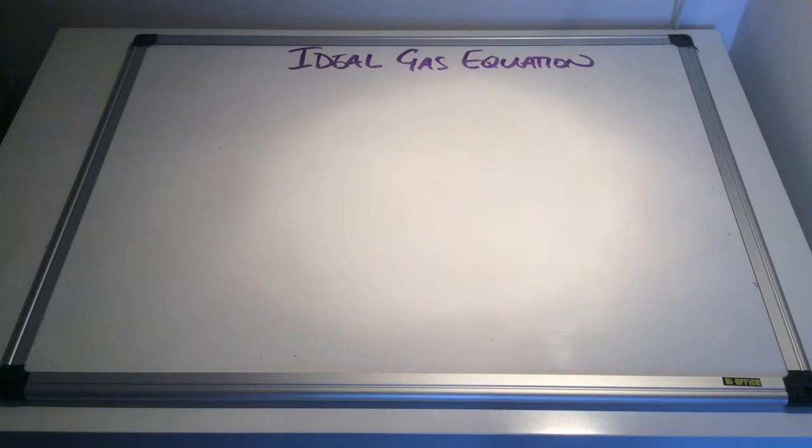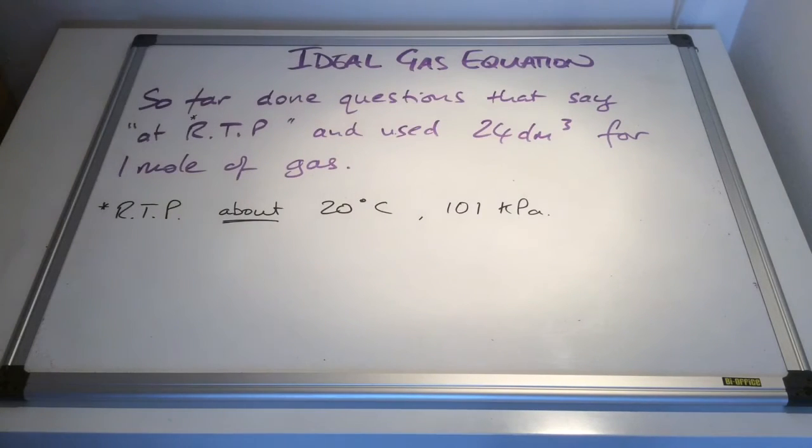In this video I'm going to look at the ideal gas equation. Before I look at the ideal gas equation, I just want to explain why we use it and how it's different to the questions that we've done so far that say RTP in them, room temperature and pressure, and we've therefore used the molar gas volume of 24 dm cubed.